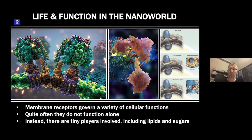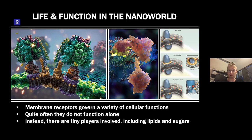The key to understanding signaling is really to understand membrane receptors — they are the hubs, the centers of communication. The difficulty is that not many membrane receptor structures are known. There are hundreds of thousands of structures in the PDB databases for water-soluble proteins, which is relatively easier. But for membrane receptors, the number of known structures is quite modest — just a few hundred. That makes studies of membrane receptors quite difficult, both experimentally and in simulations, because we can't do simulations unless we know the structure to start with.